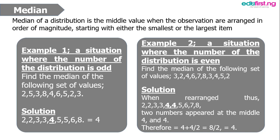The question says: find the median of the following set of values: 2, 5, 3, 8, 4, 6, 5, 2, and 3. Once they are arranged in order of magnitude, the middle number of this given set of numbers is 4. Therefore, 4 is the median of the set of numbers.